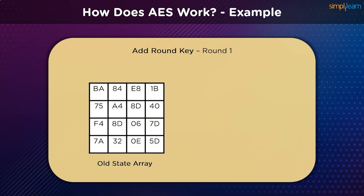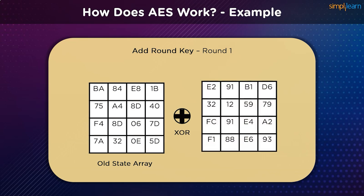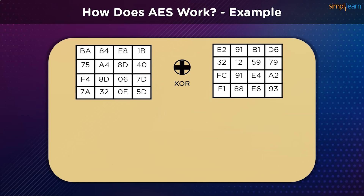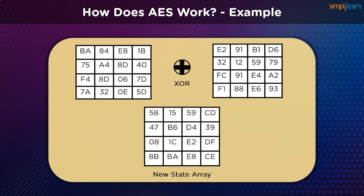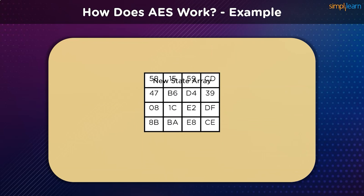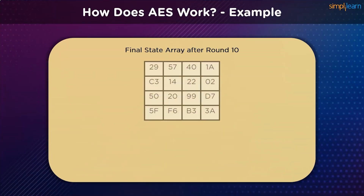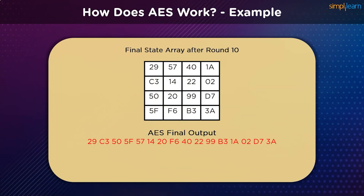We then XOR the new state array with the round key of the particular iteration. Whatever state array we receive becomes the output for that round. Since this is the first round of the encryption process, the state array is passed as input to the next round. We repeat this process for 10 rounds total, and finally receive a ciphertext. Once the final state array is expressed in hexadecimal format, this becomes our final ciphertext used for transferring information between sender and receiver.